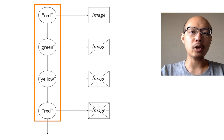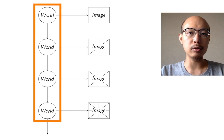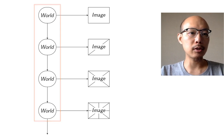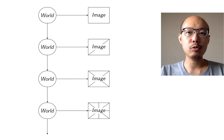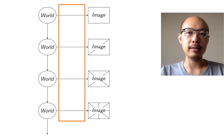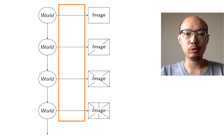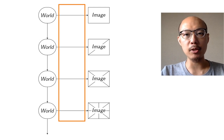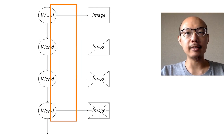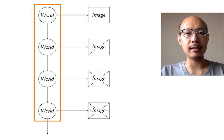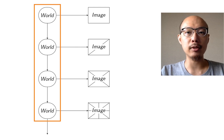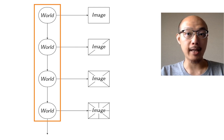Whatever we use is called a world. So a BigBan animation needs two functions: one to tell us how to draw a world as an image, and secondly to tell us how to turn each world into its next world.